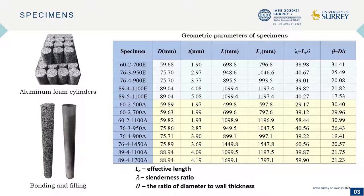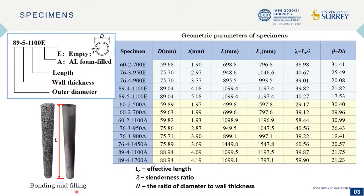The aluminum foam was cut into cylinders and bonded, then it was filled into aluminum tubes with circular hollow sections. The geometric parameters are listed in the table.